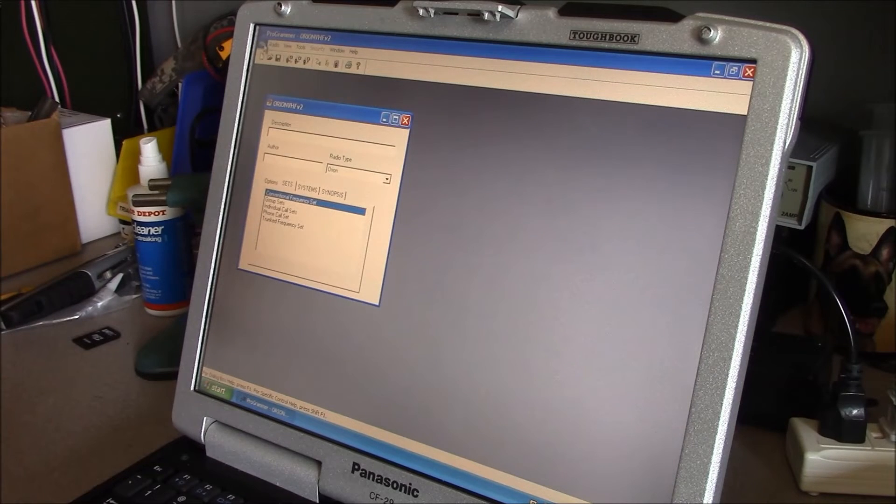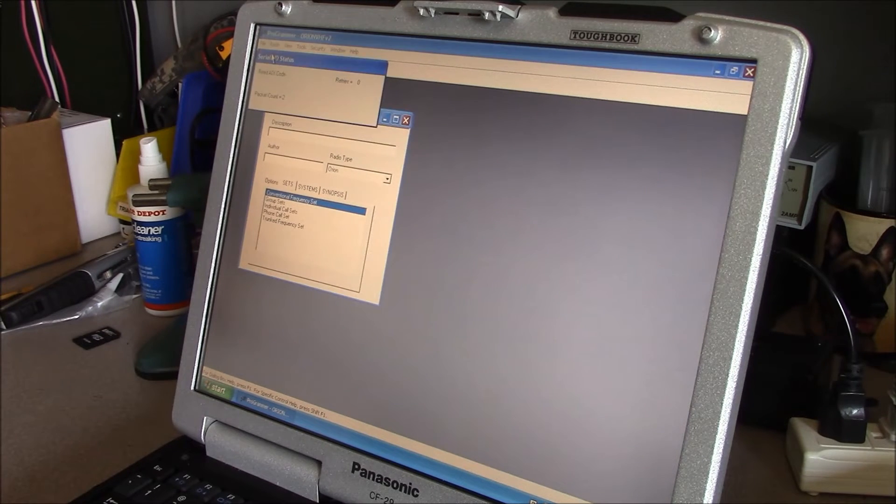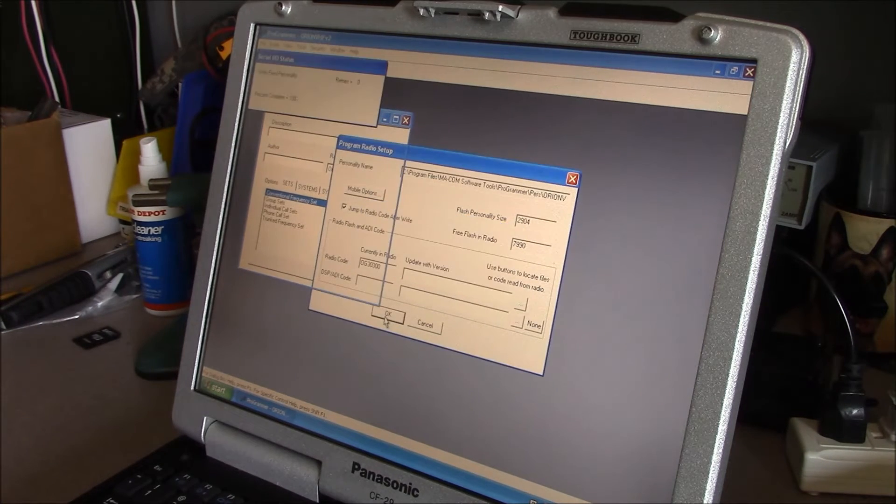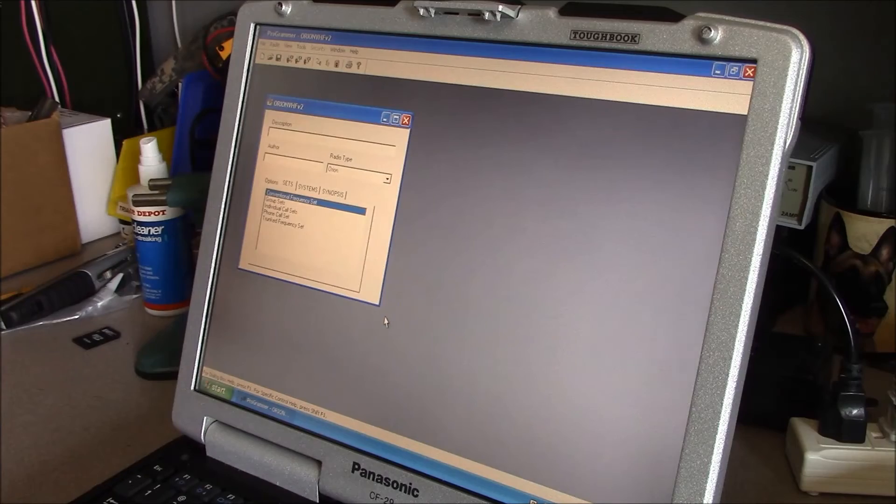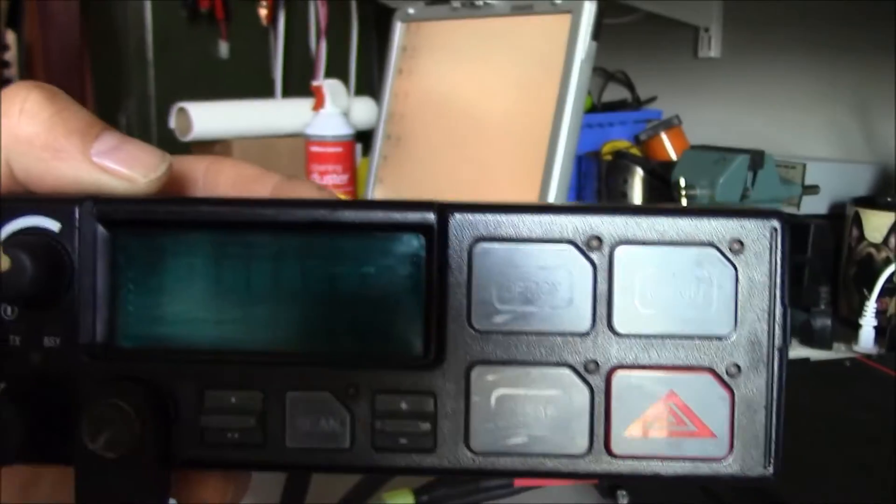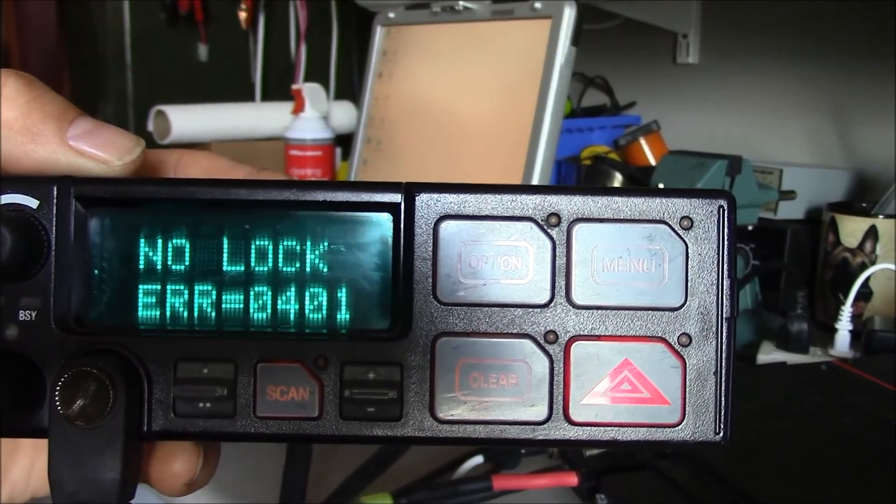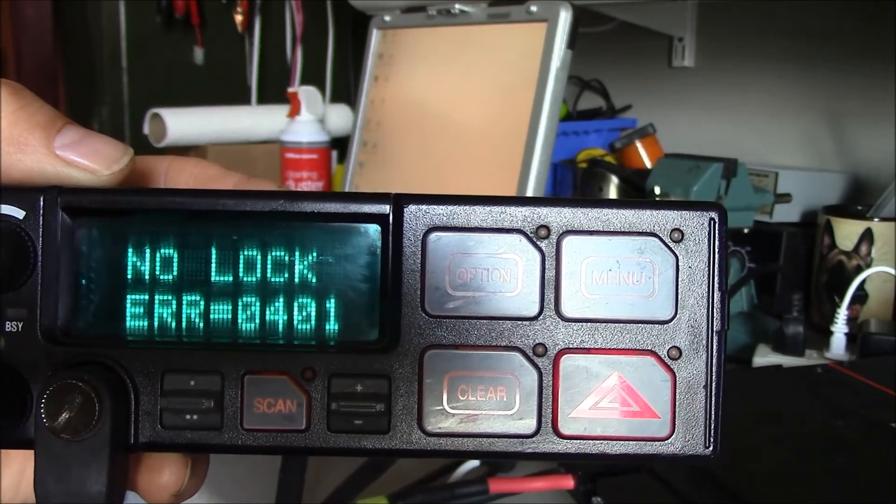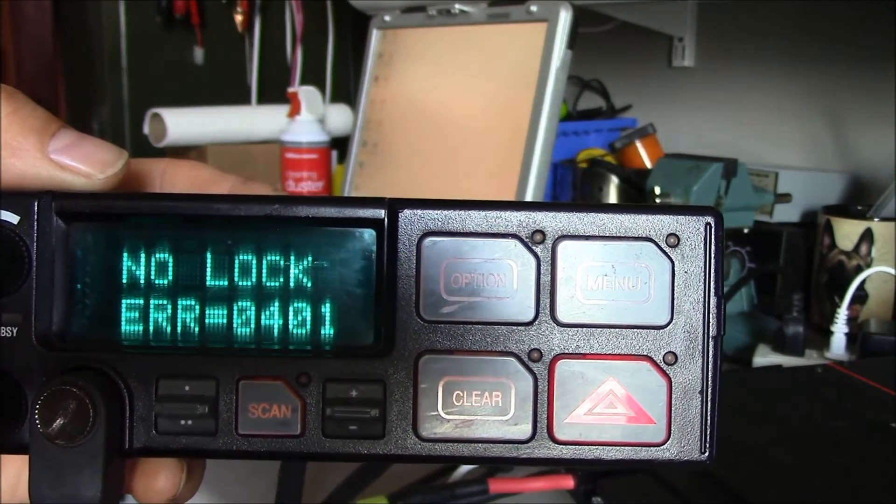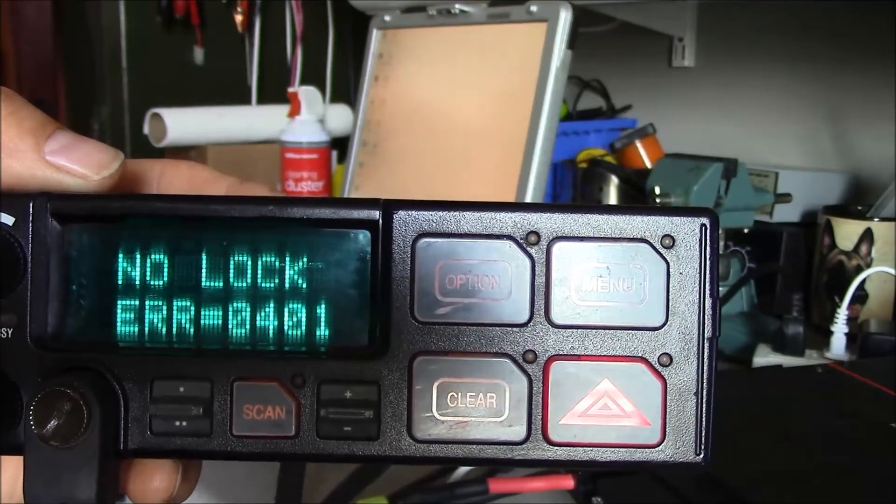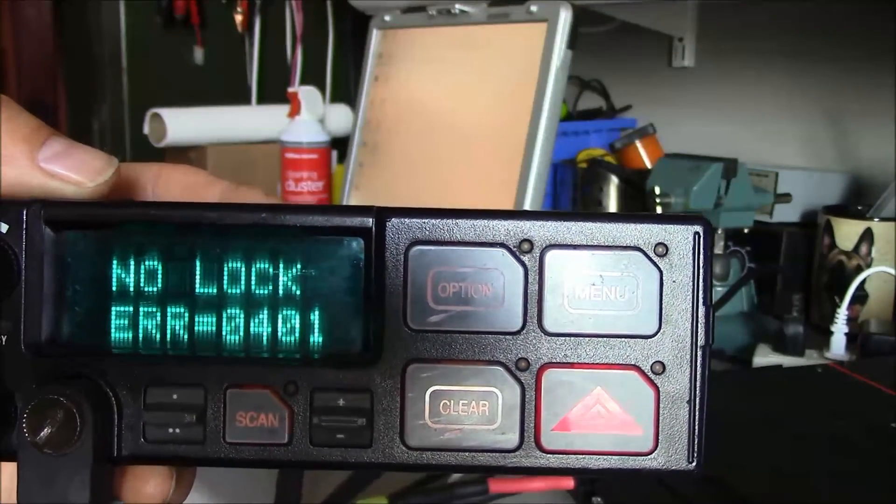Go ahead and save it. And then go ahead and write it to the radio. And that's all there is to it. Well we can see now our radio is in this nasty little fail loop here because the VCO won't lock so now we have to address that issue. And the way we do that is by actually doing some hardware modifications to the radio.